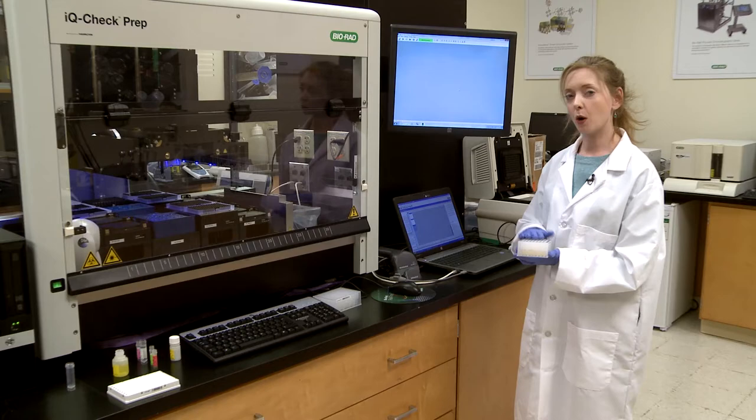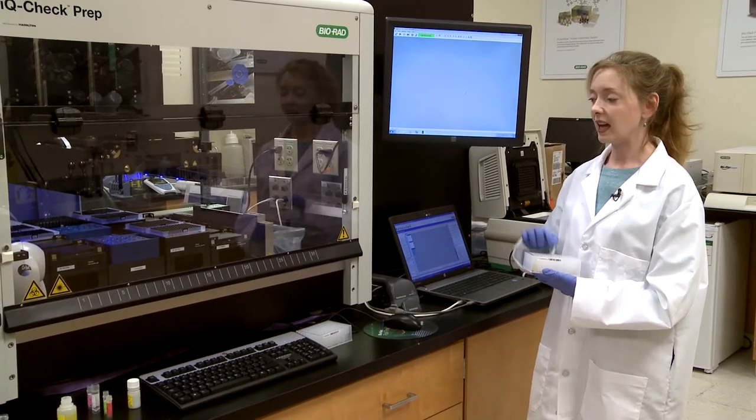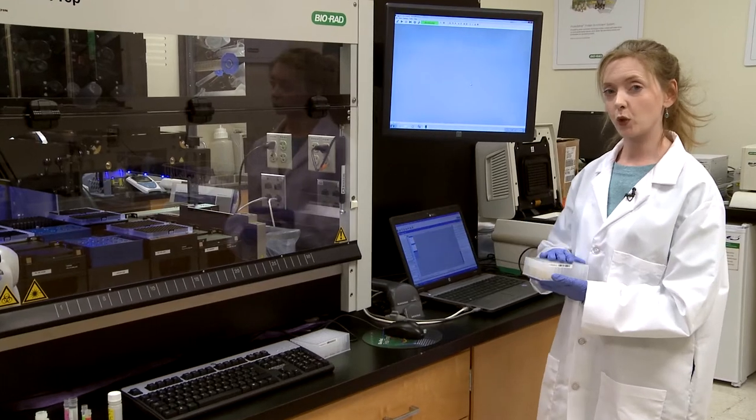Here is a deep well plate containing samples I want to test. You'll notice there's a handy barcode on the side that allows the robot to understand which plate it's working with.